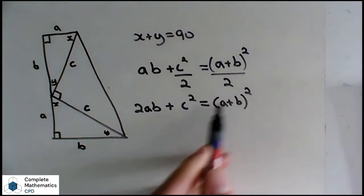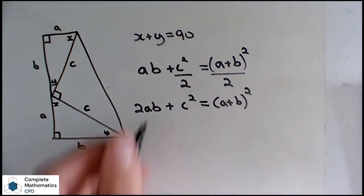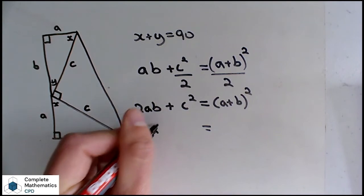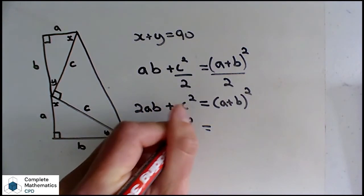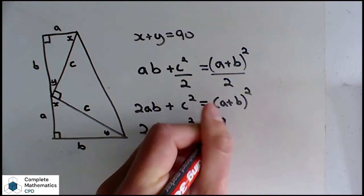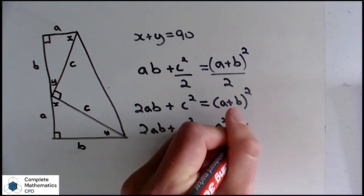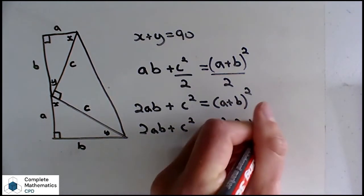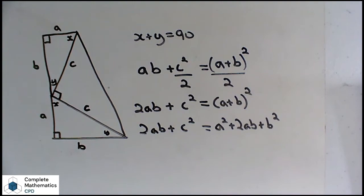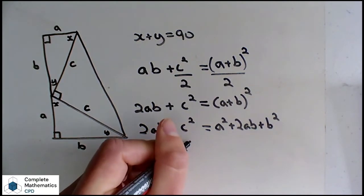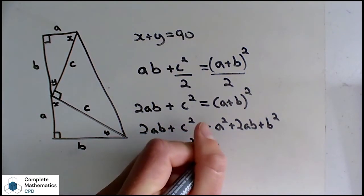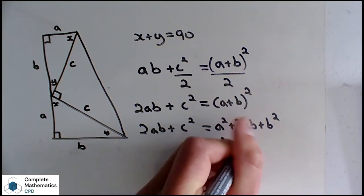And if we've learned how to expand binomials here, we can do that, and that's going to give us 2AB plus C squared equals A squared plus 2AB plus B squared. These two terms here will now cancel out, and that will leave us with C squared is equal to A squared plus B squared, Pythagoras' theorem.